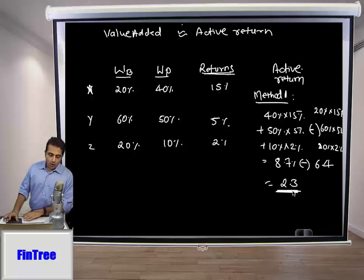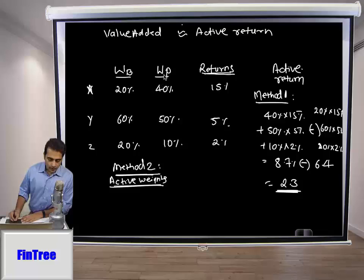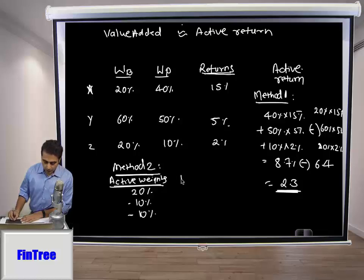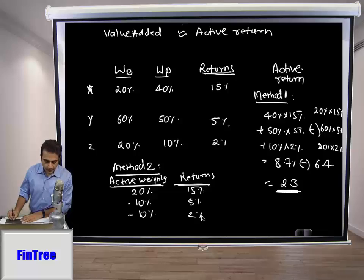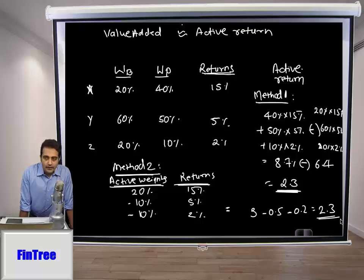Alternatively, Method 2: calculate active weights directly — sector X is +20%, sector Y is minus 10%, sector Z is minus 10%. Multiply active weights by sector returns: 20%×15% + (−10%)×5% + (−10%)×2% = 3 − 0.5 − 0.2 = 2.3%. So active returns can be calculated either as portfolio return minus benchmark return, or as active weights times sector returns.